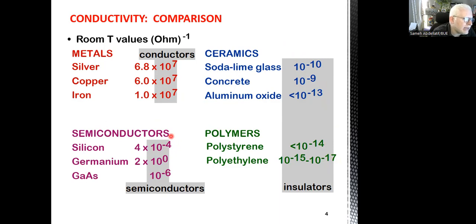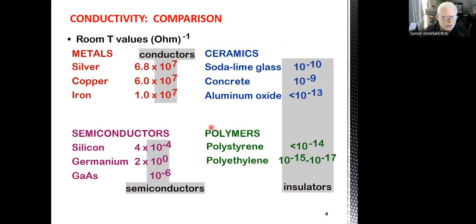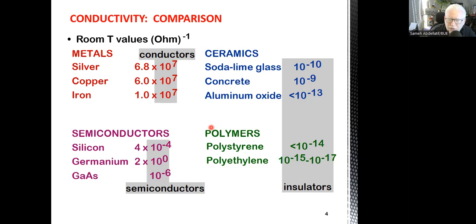Based on that, we can consider three types of materials from an electrical perspective: conducting materials (conductors), insulators or dielectrics, and also semiconductors. There is another physical way of expressing these materials related to what we call the energy band diagram.